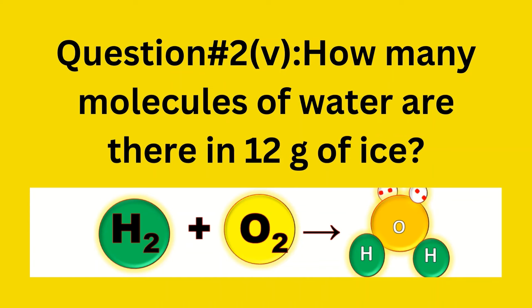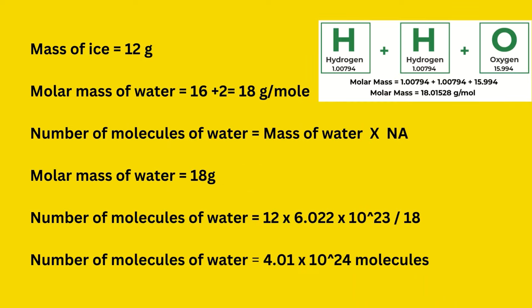Question number two, part five: how many molecules of water are there in 12 grams of ice? Mass of ice = 12 g. Gram molar mass of water = 16 + 2 = 18 g/mol. Number of molecules of water = mass of water × Avogadro's number ÷ molar mass = 12 × 6.022 × 10²³ ÷ 18 = 4.01 × 10²³ molecules.